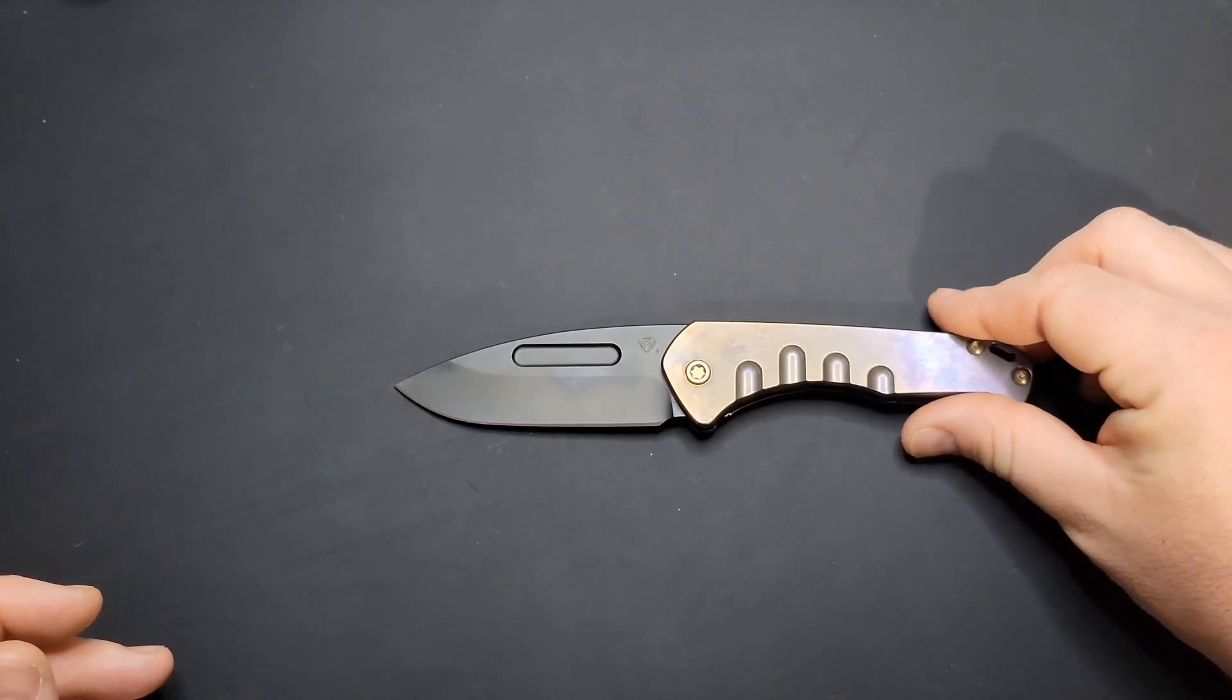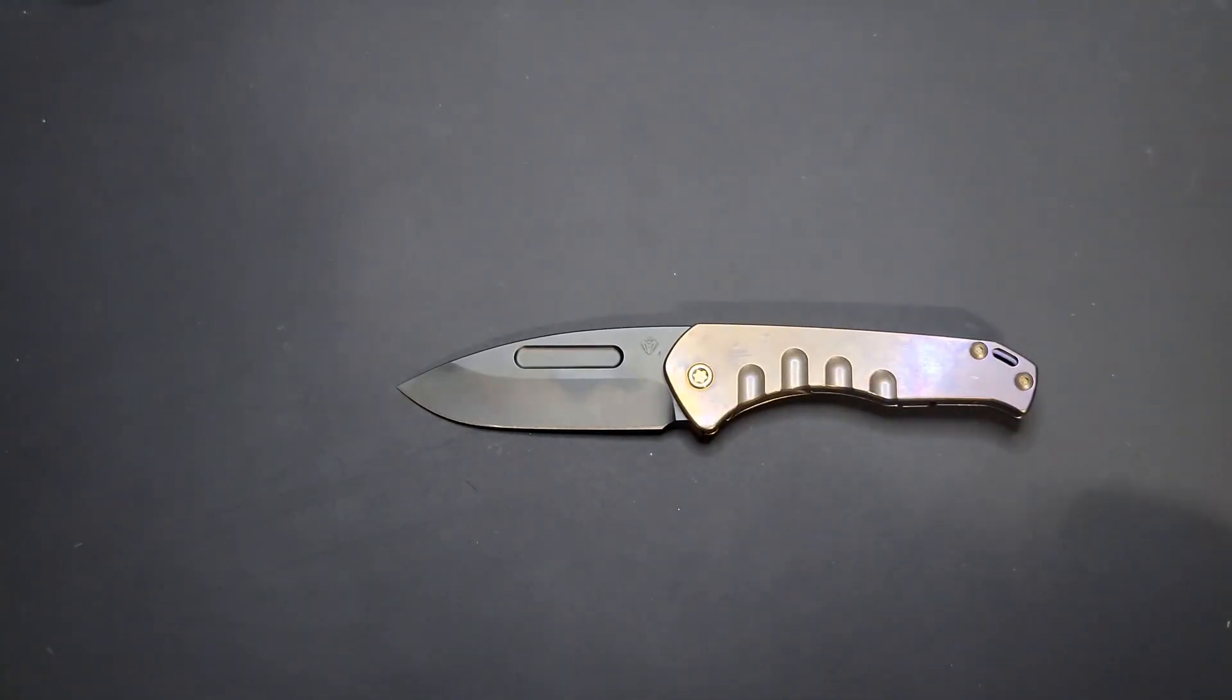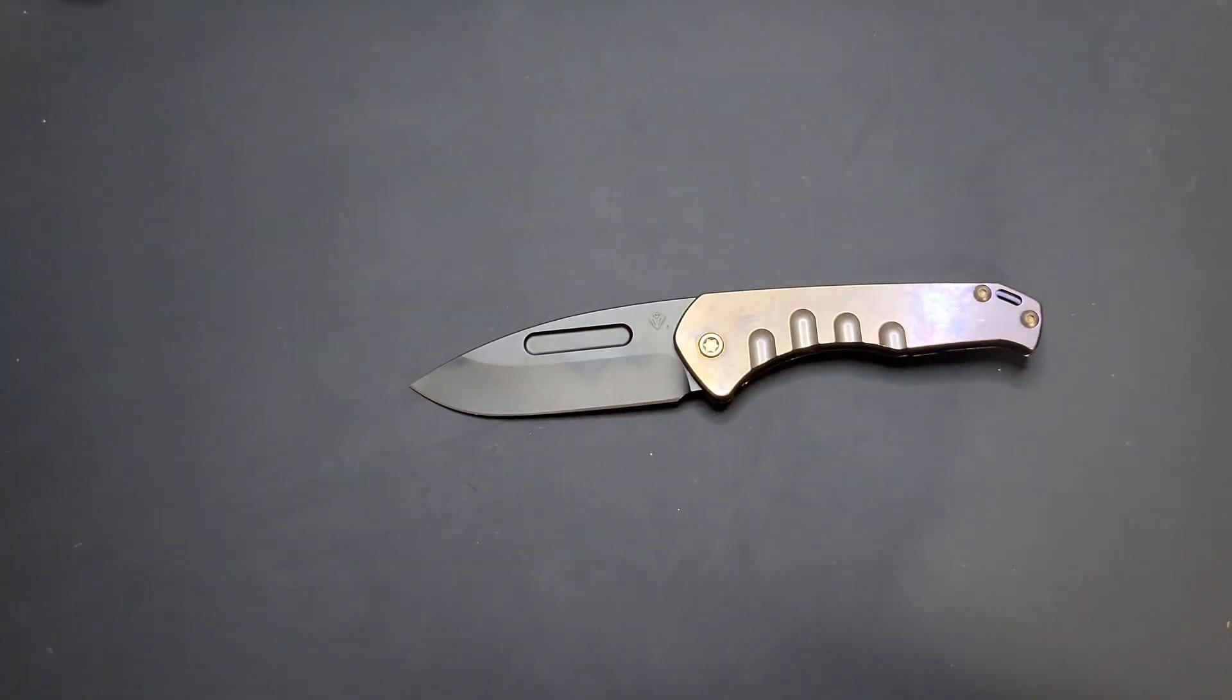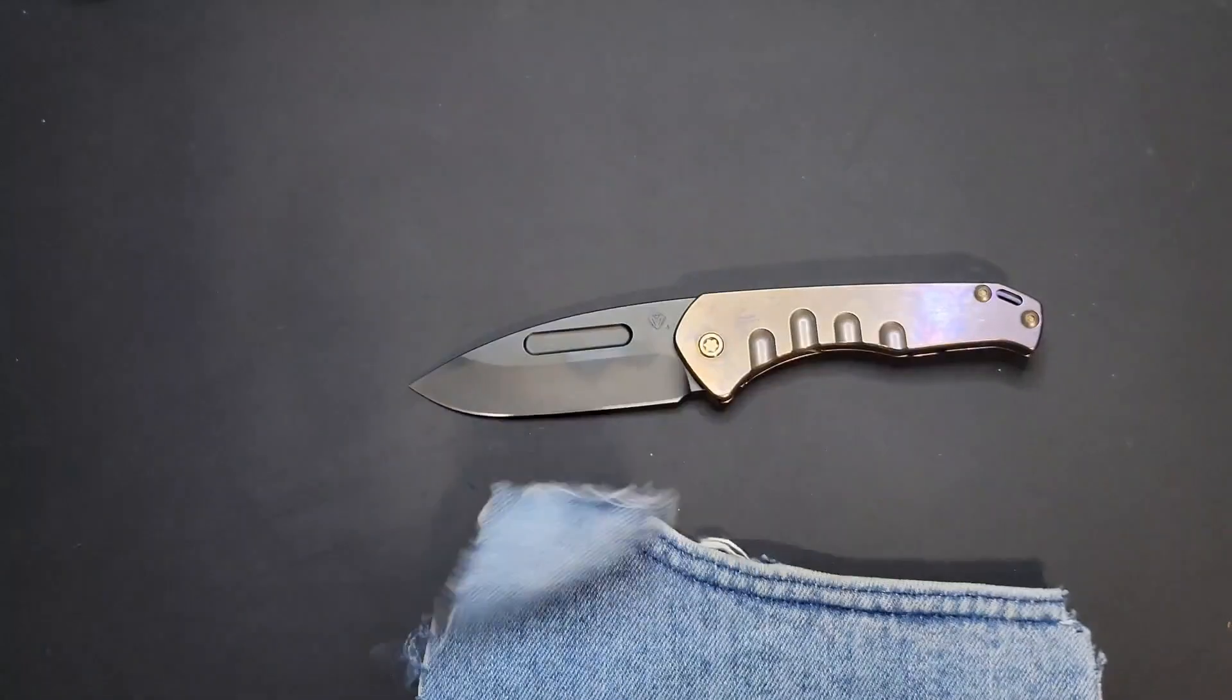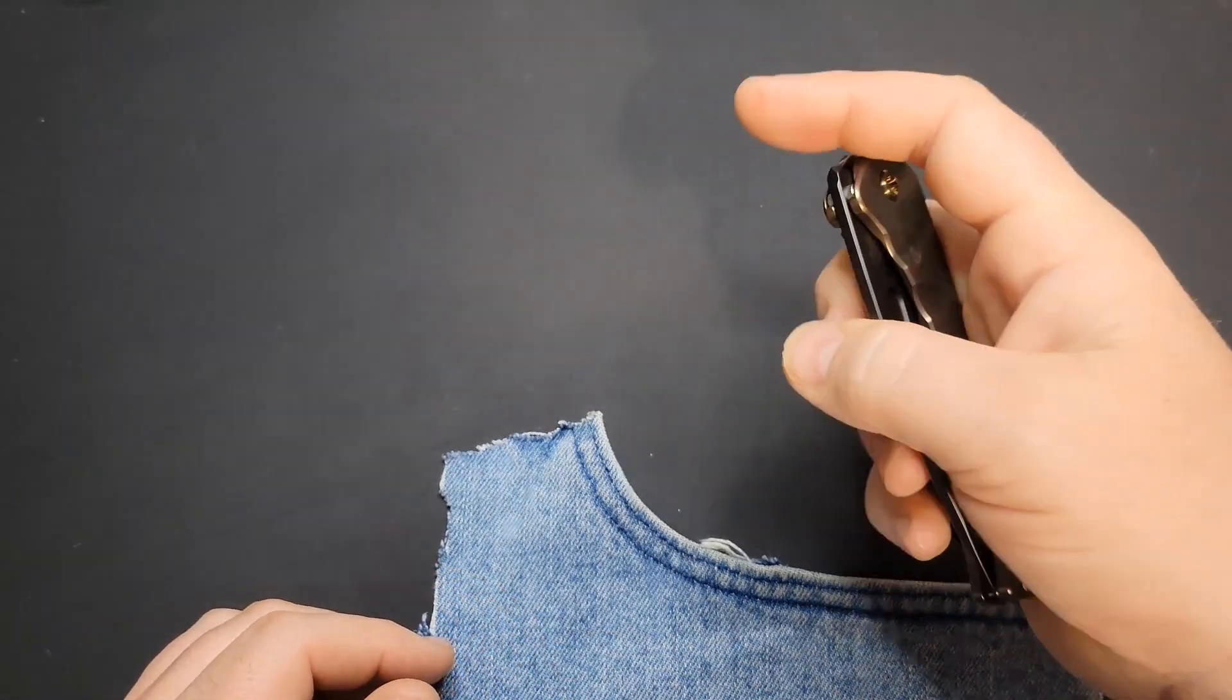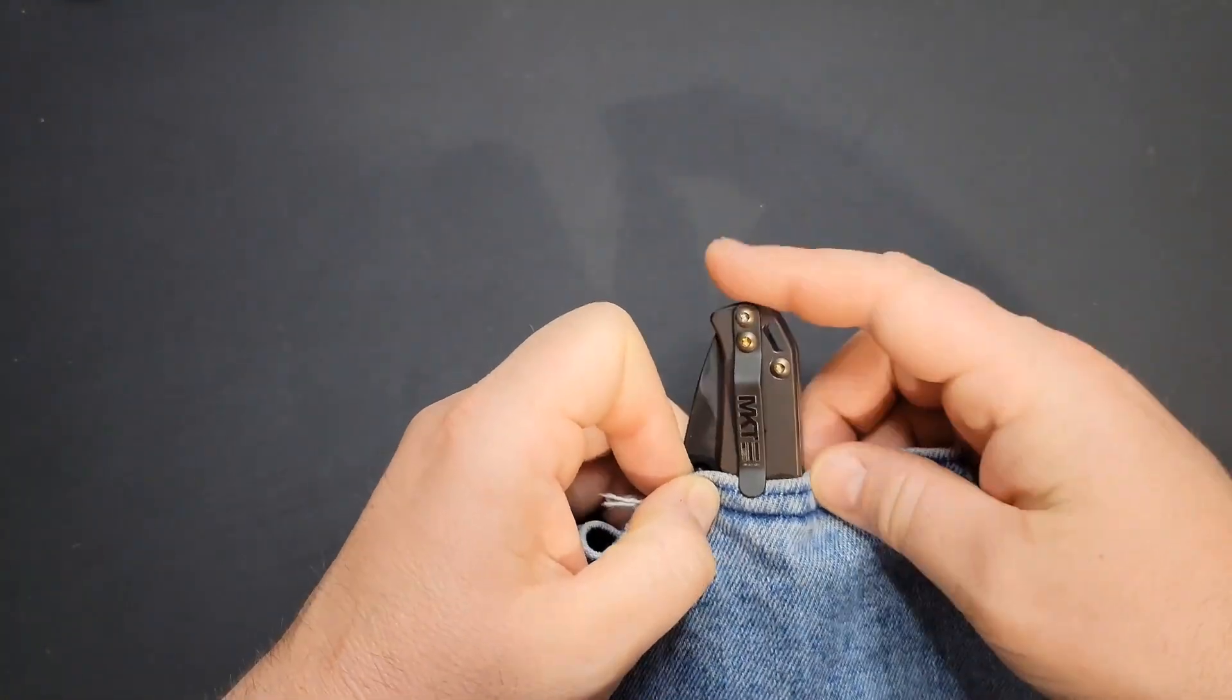I'll tell you what, for a supposedly overbuilt knife from an overbuilt knife company, this thing is surprisingly easy to manipulate. I really like it. I was surprised the first time I flipped it open. I was like, man, Medford's just supposed to be slow and clunky and all that. Turns out this thing is actually pretty good as far as smoothness goes. It's a frame lock too, by the way. Locks out perfectly fine.